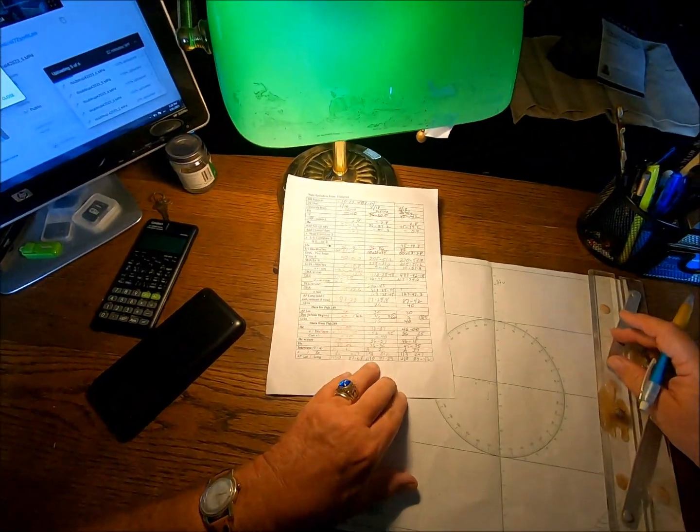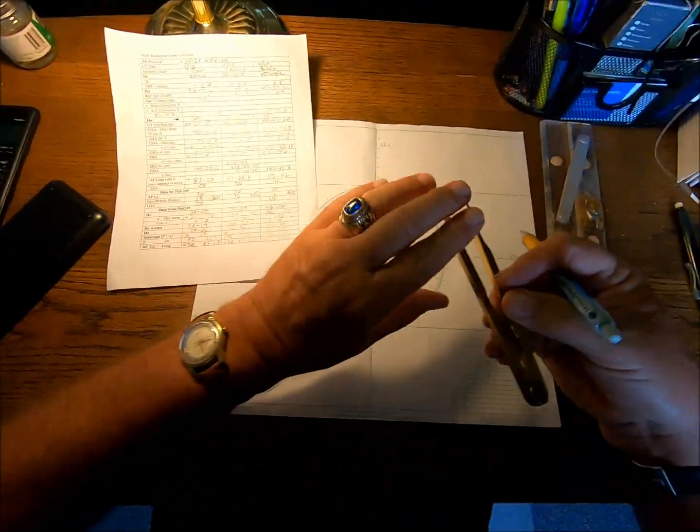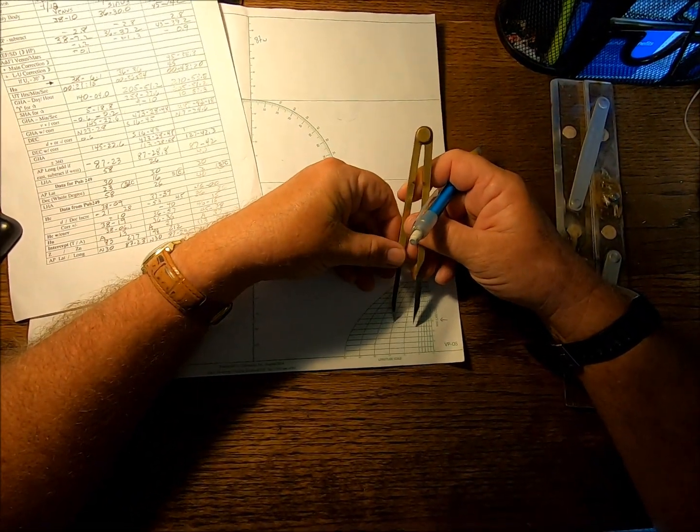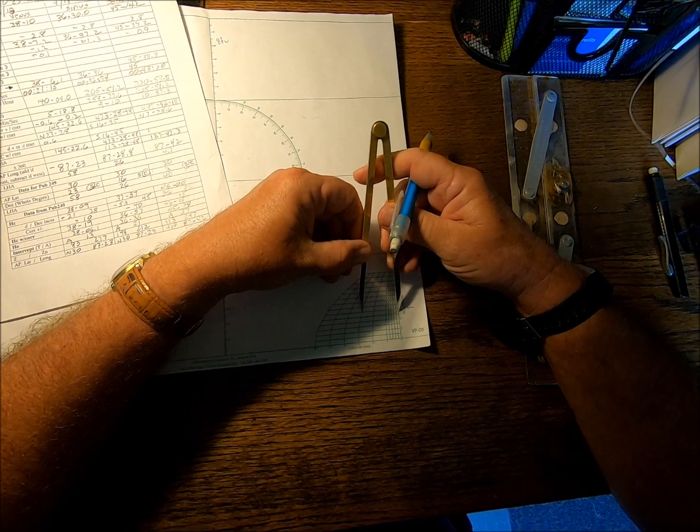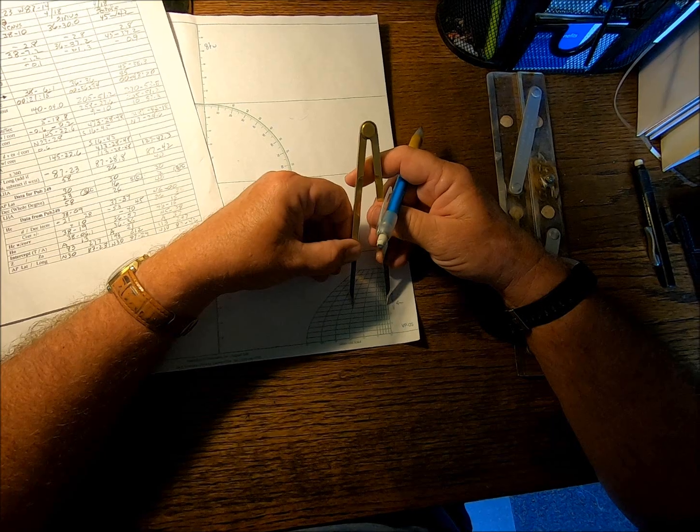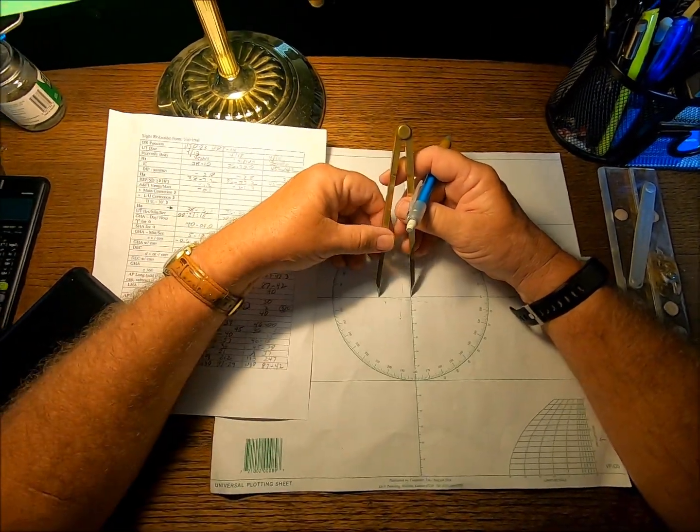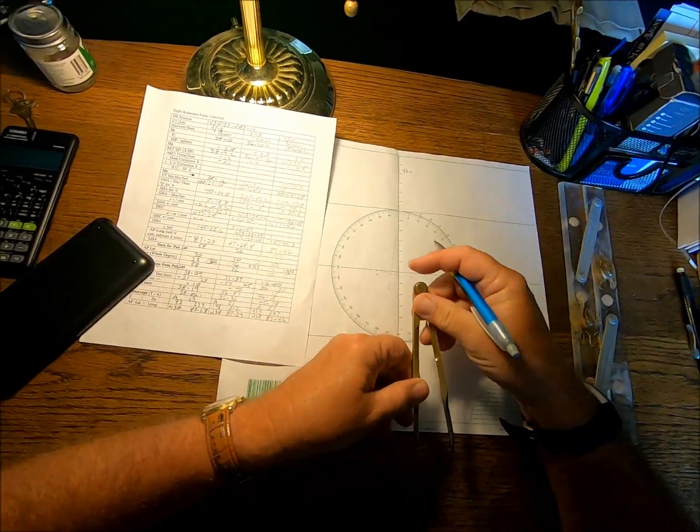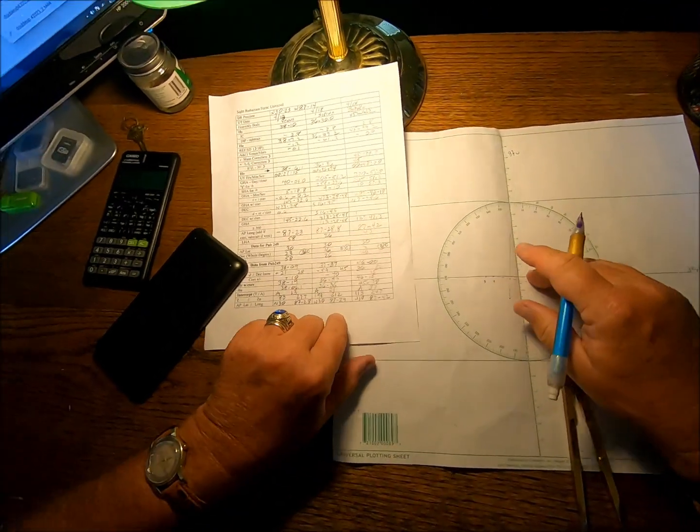Let's go on to Sirius now. That's at 87.29. So, we want to pick off 29 down here. Come up here and find 29 minutes west. This is going to be Sirius.